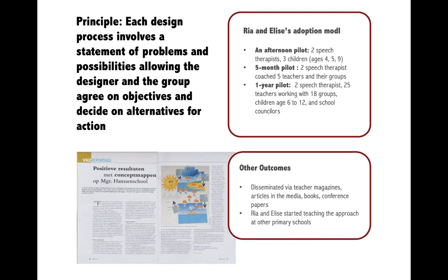Principle: each design process involves a statement of problems and possibilities, allowing the designer and the group to agree on objectives and decide on alternatives for action. Rea and Elise's adoption model involves three pilots escalating in participation and duration. Other outcomes involve dissemination via teacher magazines, articles in media, books, and conference papers. Rea and Elise started teaching the approach at other primary schools.